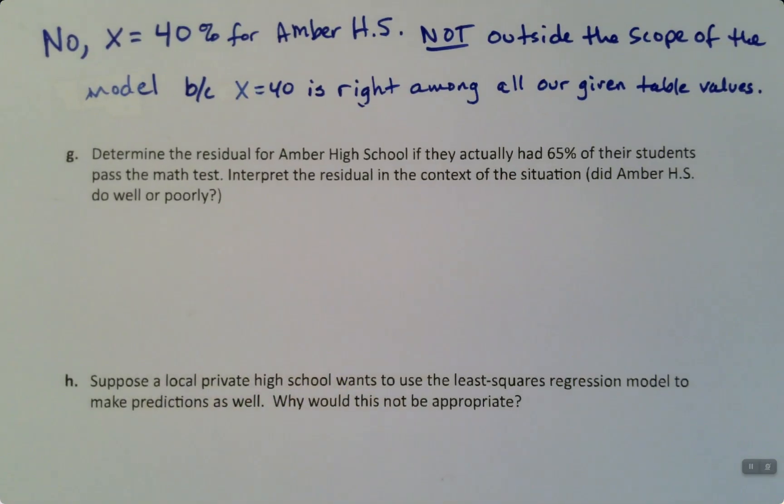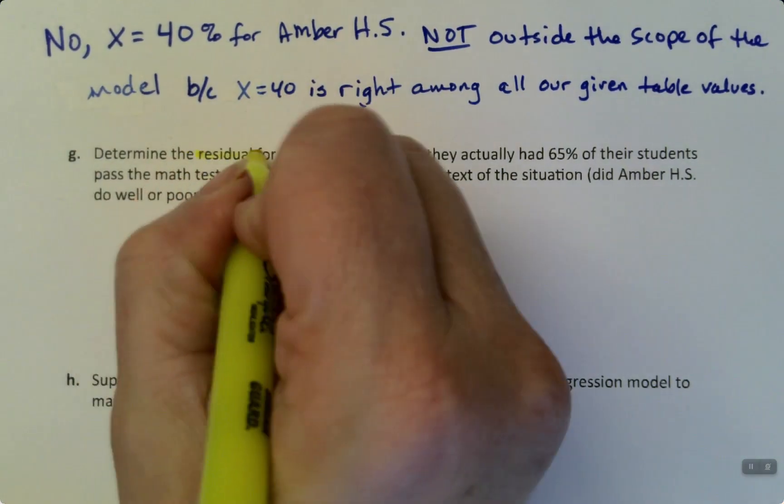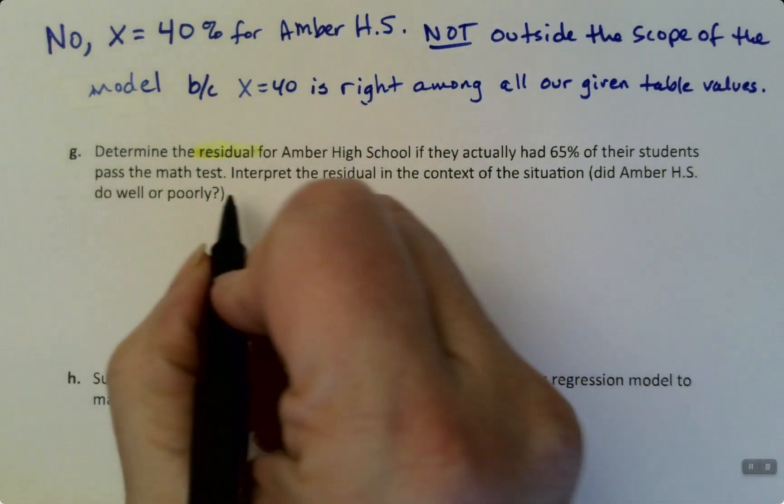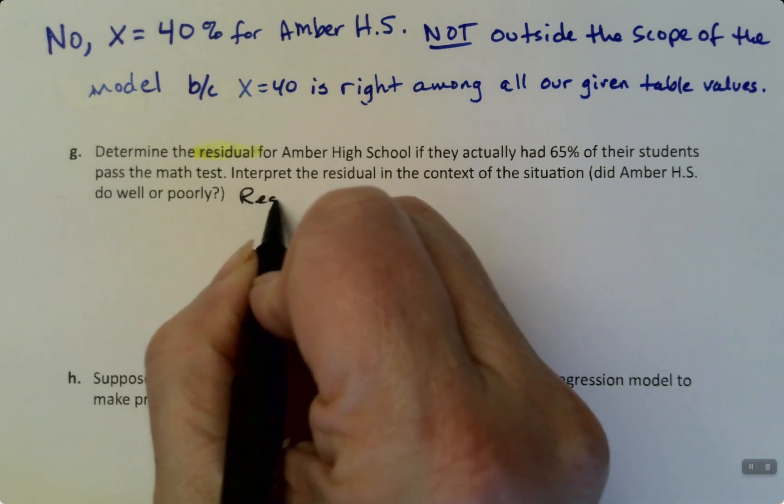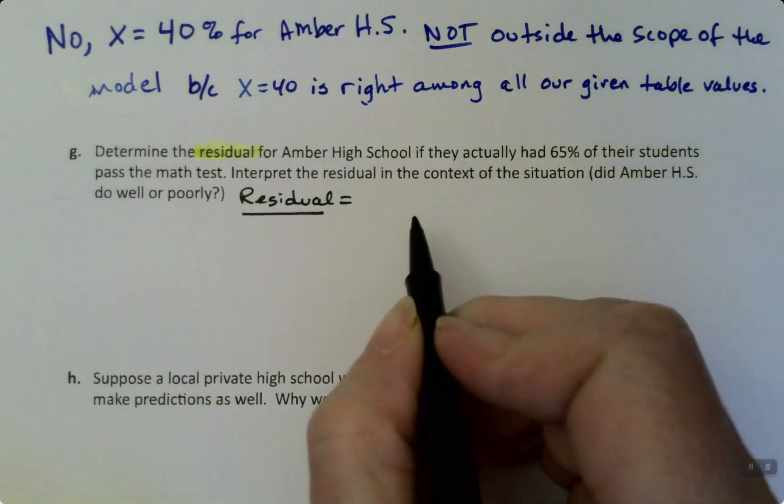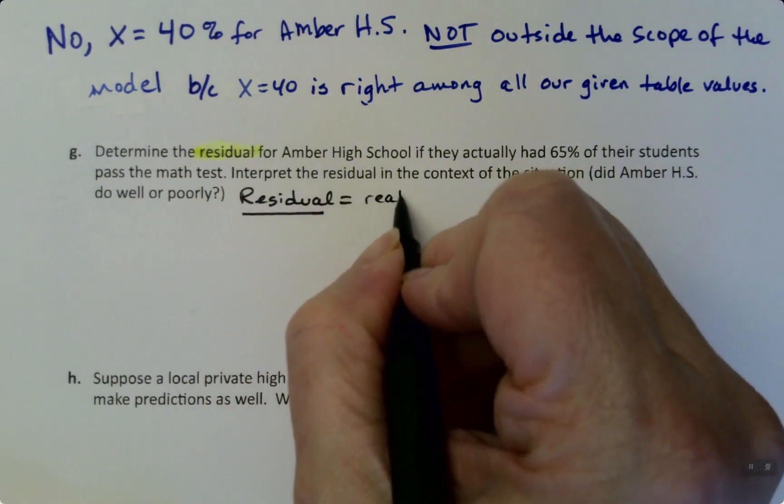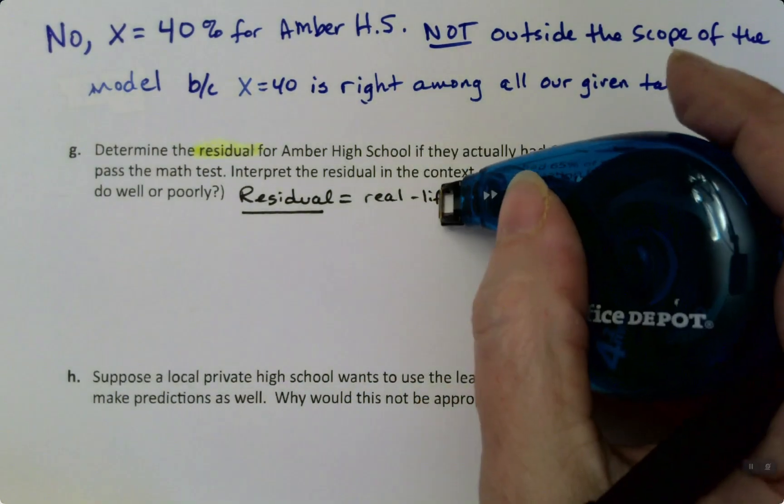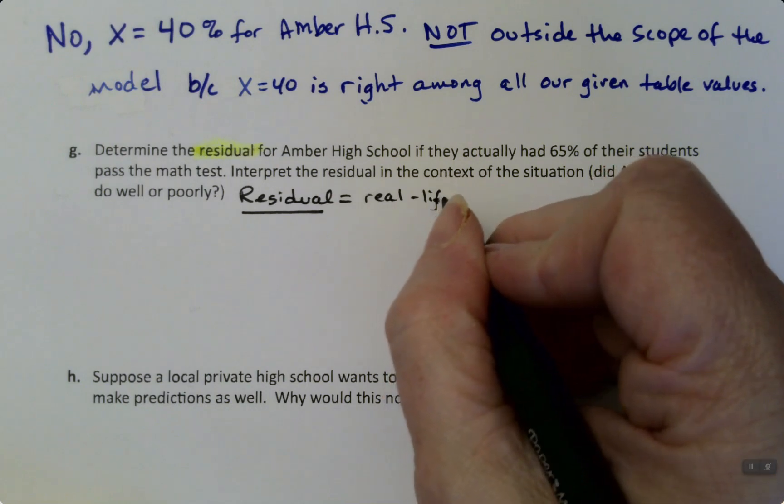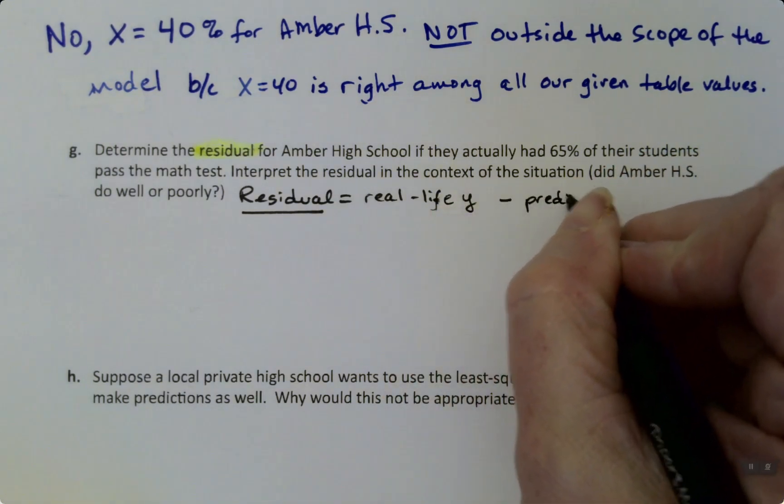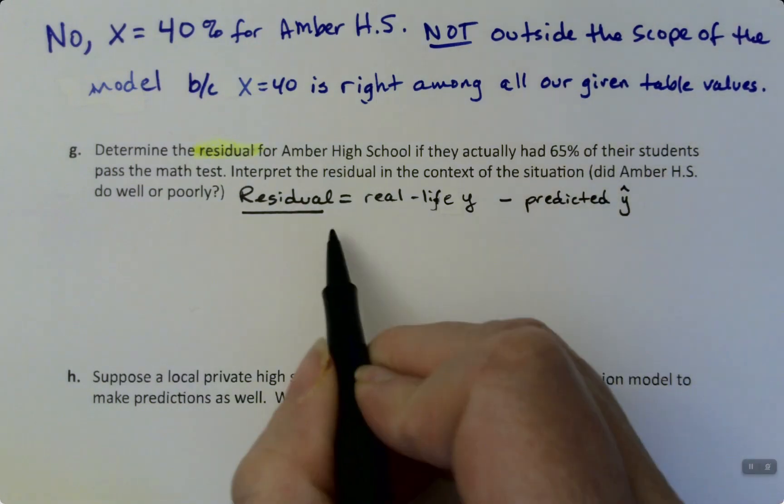Now we're going to determine the residual for Amber High School. So just note that. That's a definition that we've learned. The residual is the real life. I'm going to write it right over here. Residual. And I actually wrote like four different versions of this formula. But it's the real life y. It's the same mistake I made on the previous video. Real life y. Minus the predicted y hat.